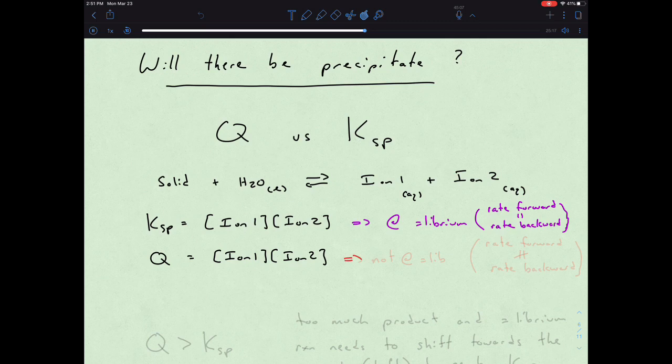With Q, we are just not at equilibrium, so our rate forward does not equal the rate backwards. So it's in that relationship of comparing Q to K that allows us to figure out whether the equilibrium is shifting to the right or shifting to the left. And that's really answering the question of will there be precipitate or not.